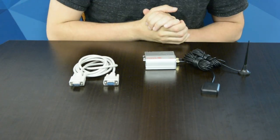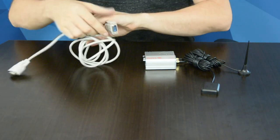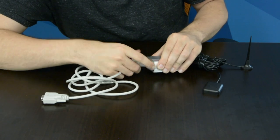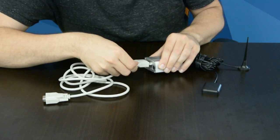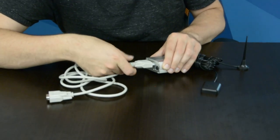After connecting the two antennas to the FX-30, we'll now take the serial cable and connect it to the serial port of the FX-30. We'll then go ahead and screw in the sides of the serial cable to ensure that it remains attached to the FX-30.